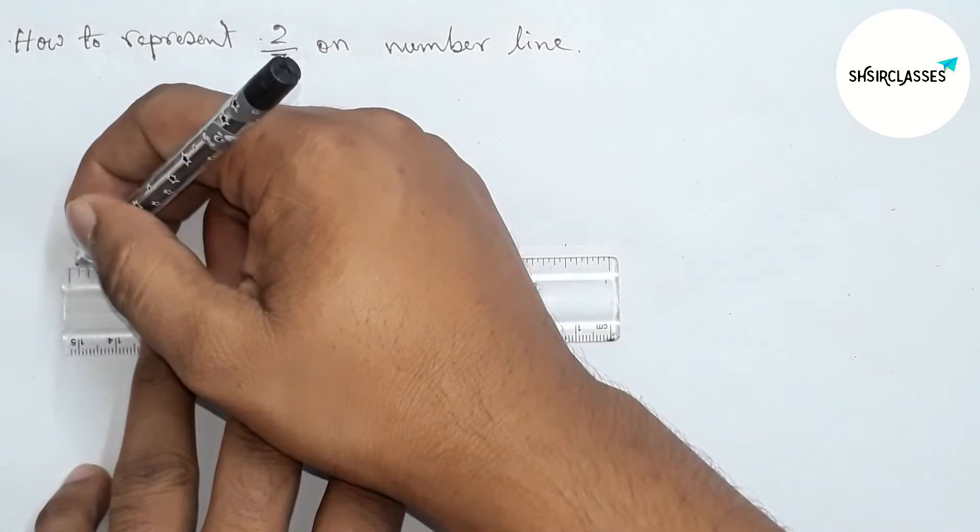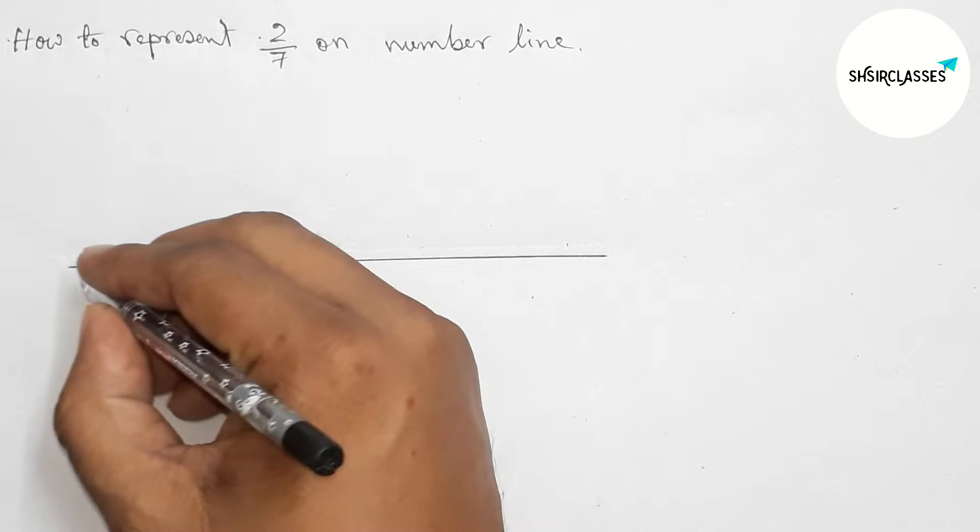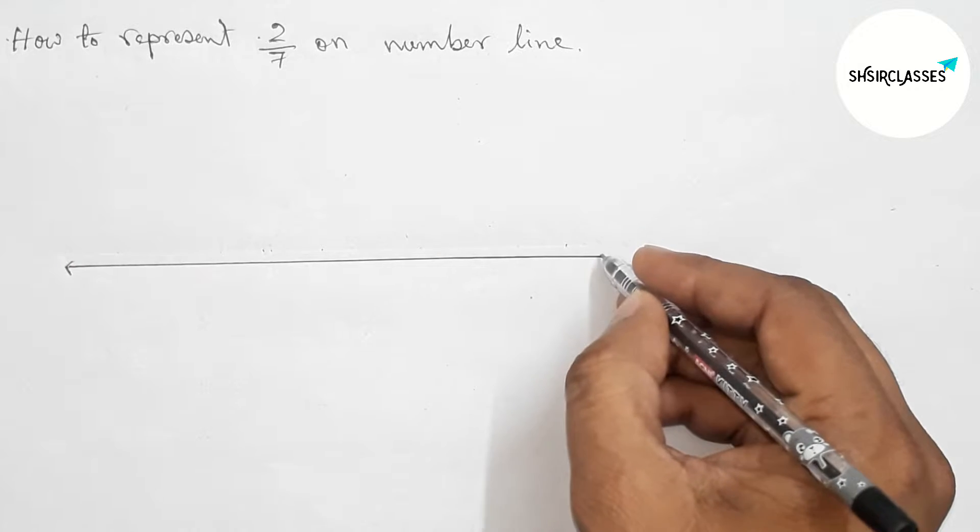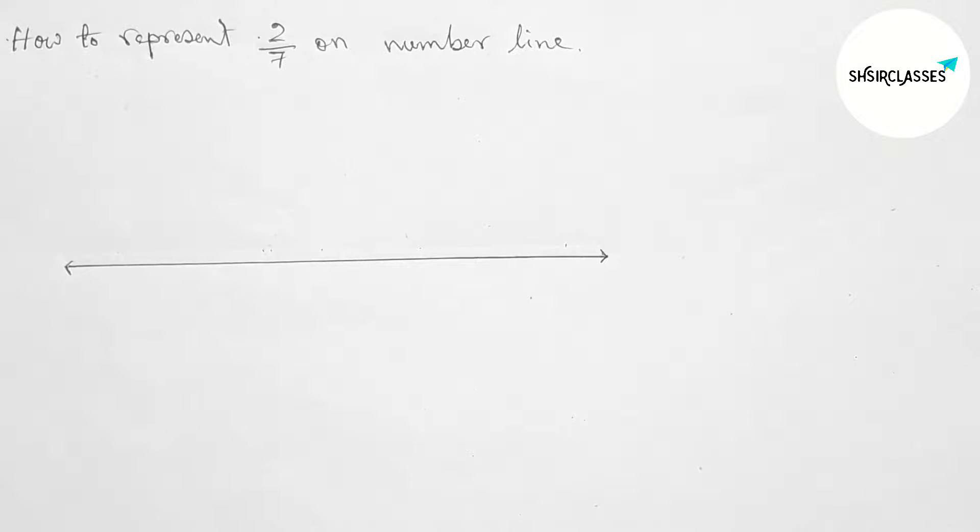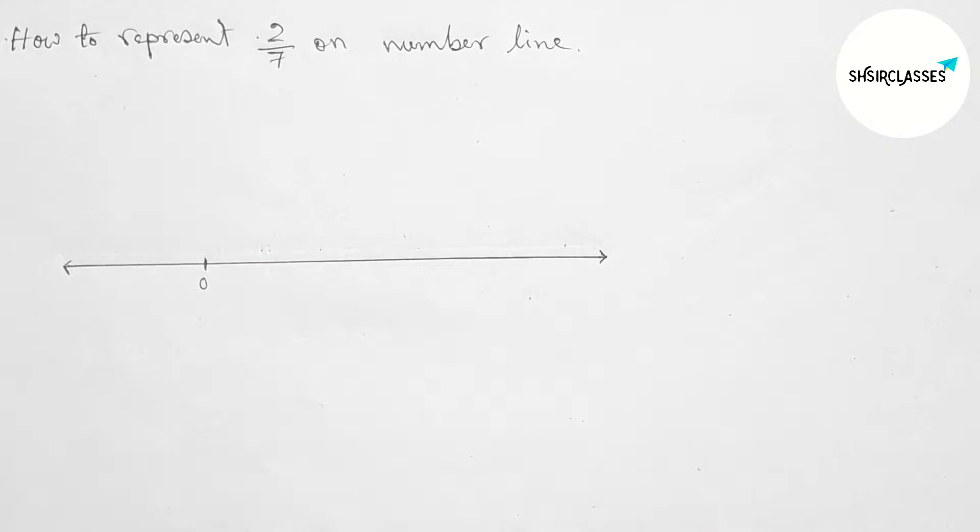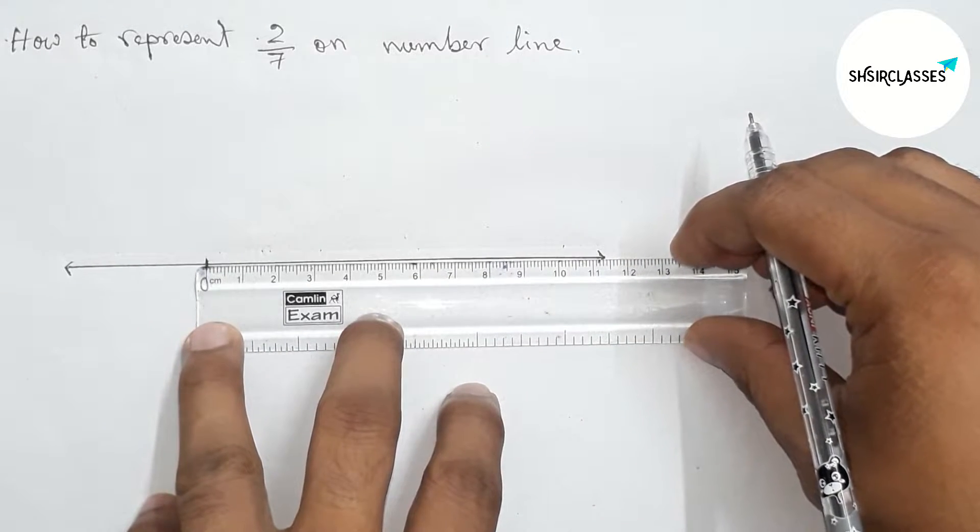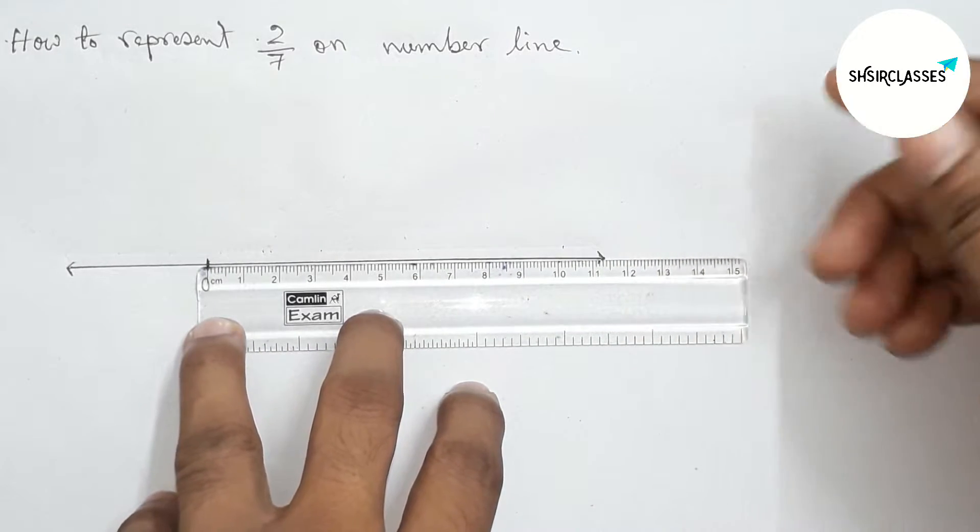First of all, making a number line. Drawing a line segment of any length and taking arrow marks on both sides. Next, taking the starting number zero.